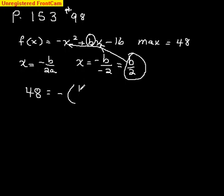So we're going to have negative b over 2 squared plus, and then we're going to replace the x here with b over 2. We're replacing all the x's with the maximum value. So it's b times b over 2 minus 16.